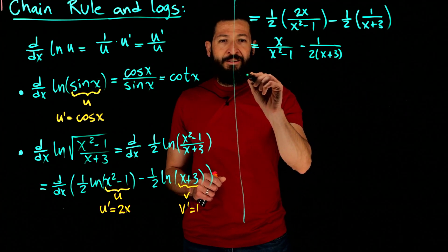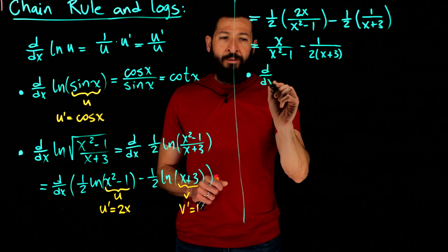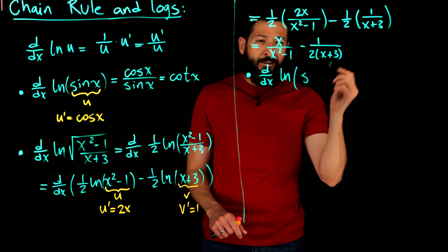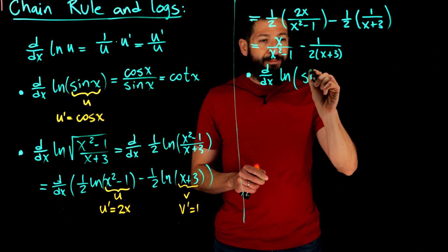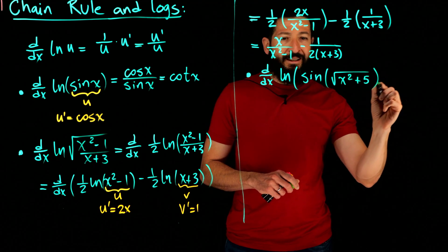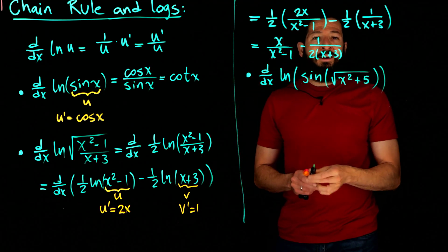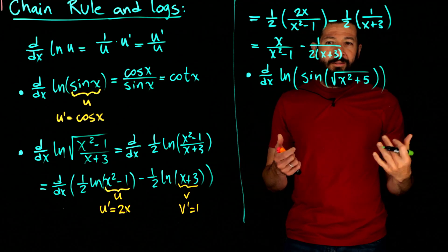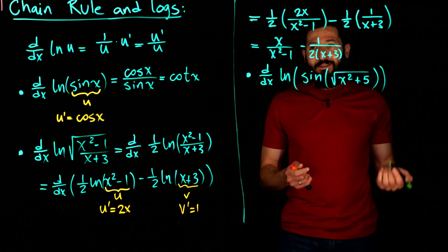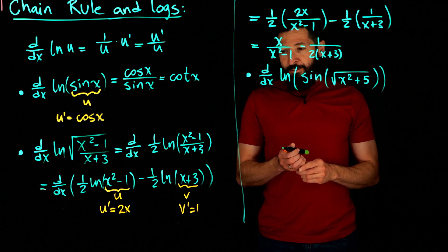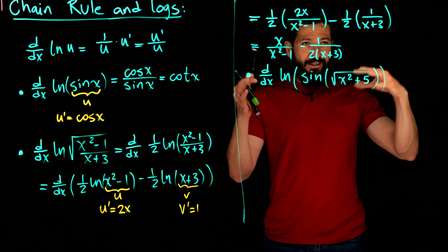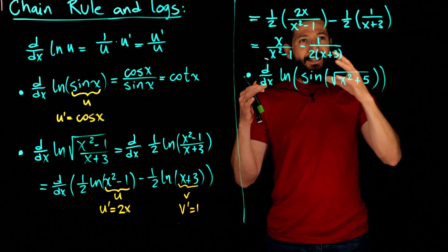Let's compute another one that is very typical for calculus exams. Take the derivative of the natural log of sine of the square root of x squared plus 5. They give you this because you have three nested functions requiring multiple chain rules, getting to practice logarithmic differentiation all at once. Don't be too worried about it — I like to treat it like peeling an onion, starting from the outermost layer and working my way in to the very center.